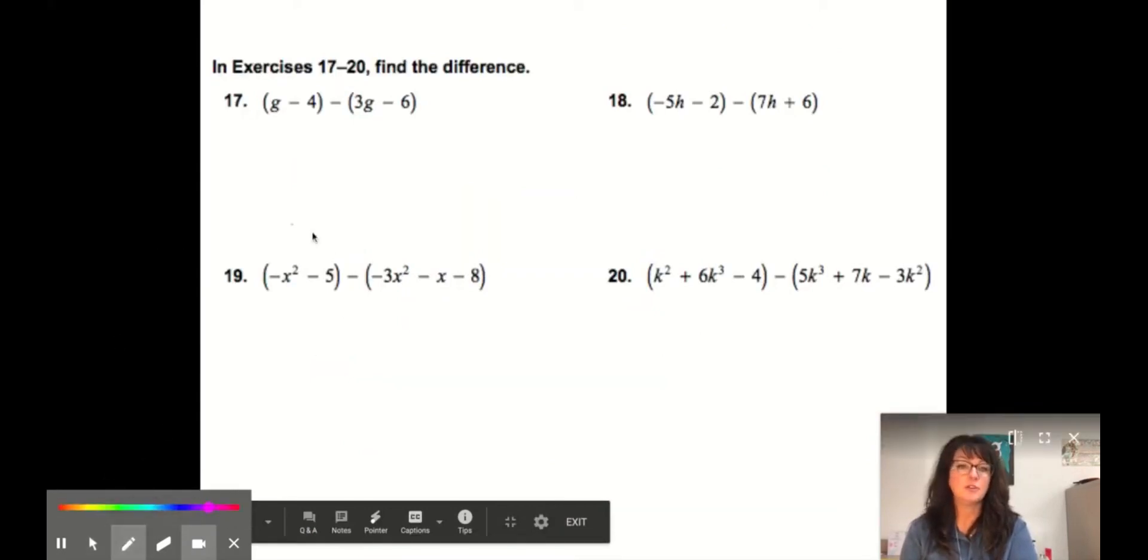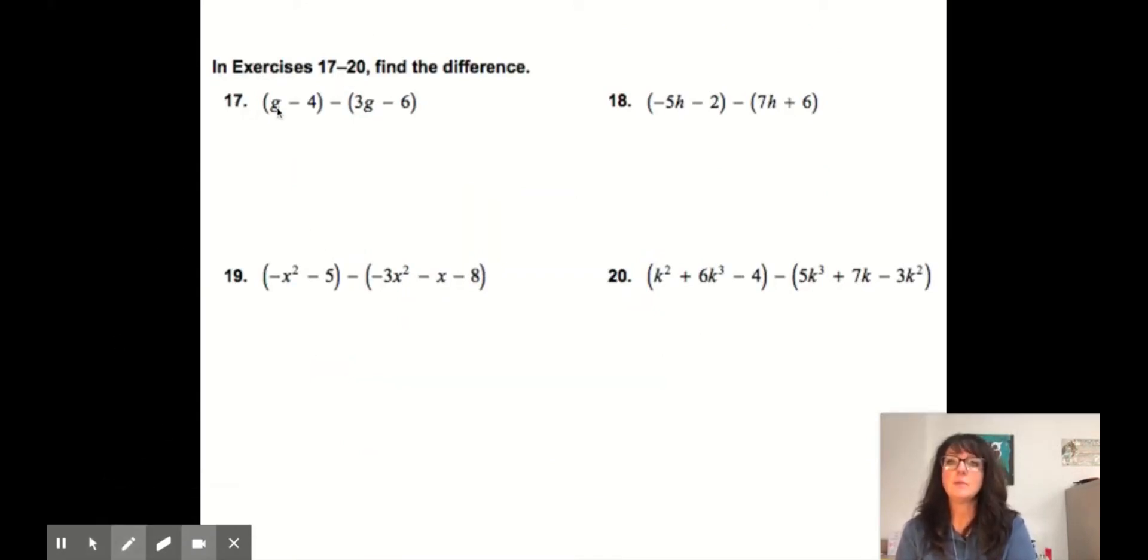I'm not going to line these up like this. I just don't. You can look in your textbook. So I'm just going to rewrite these. So the first one becomes g minus 4. And then negative 1 times 3 is negative 3g. Negative 1 times negative 6 is plus 6.